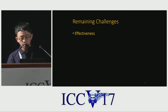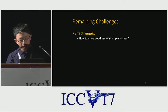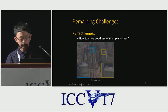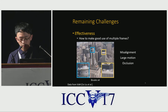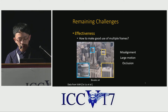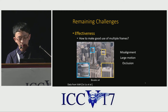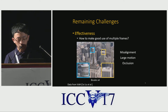The most important challenge is effectiveness — how to make good use of multiple frames. As shown in this example, objects in neighboring frames are not aligned. And in some extreme cases, there even exists large motion or occlusion, which are very hard to handle. So, are multiple frames rarely useful or even harmful to super-resolution?